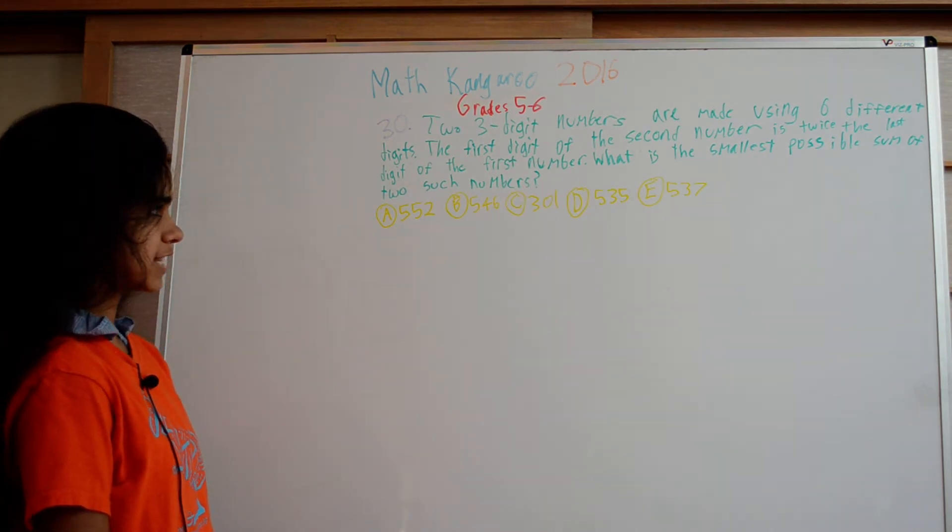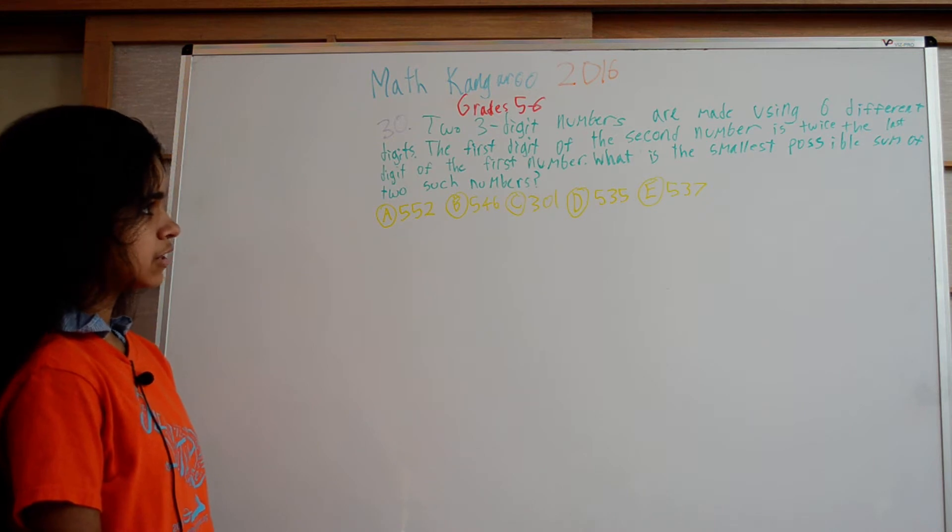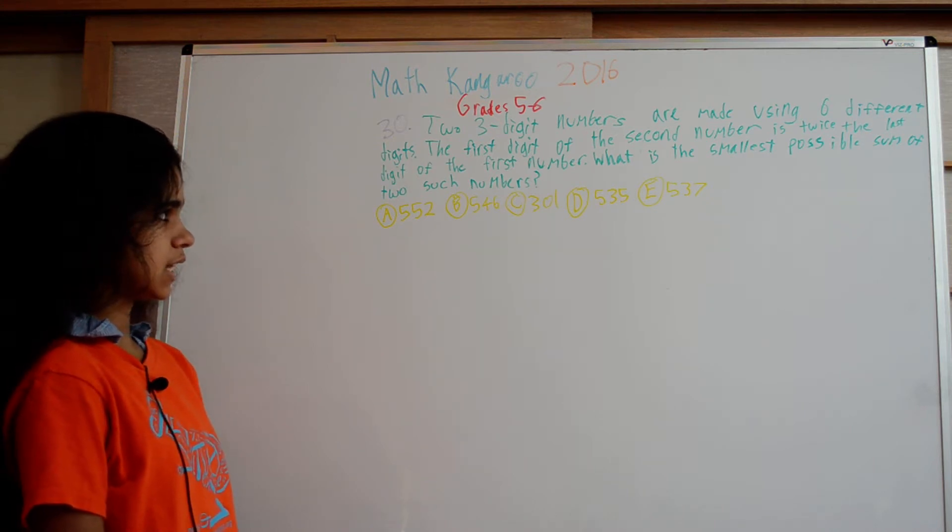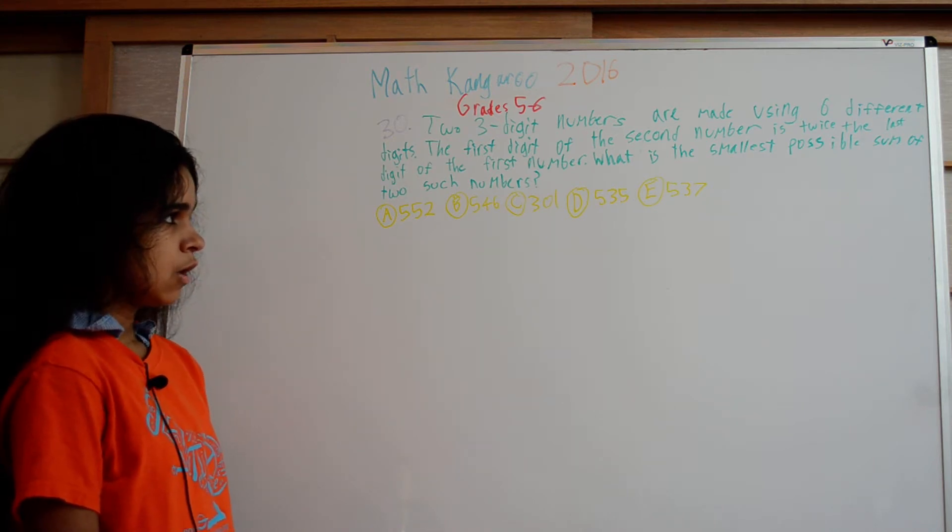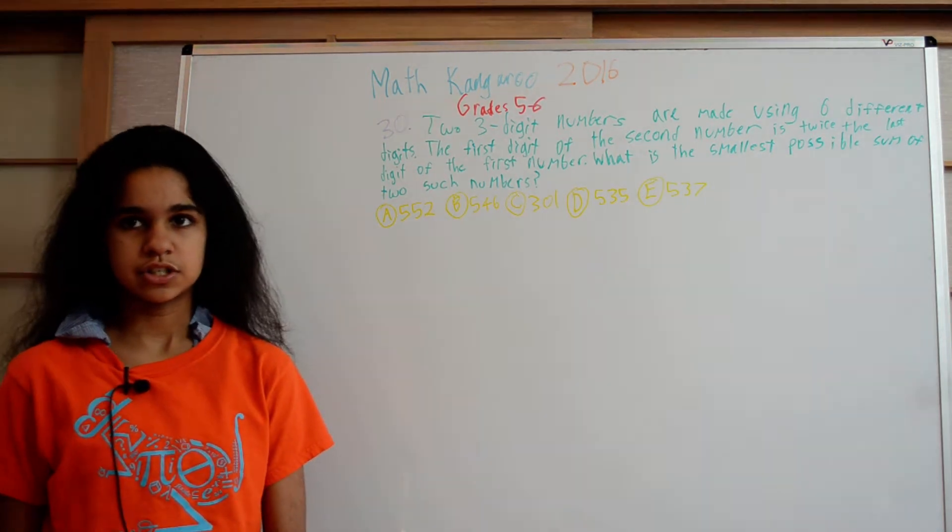Two three-digit numbers are made using six different digits. The first digit of the second number is twice the last digit of the first number. What's the smallest possible sum of two such numbers?